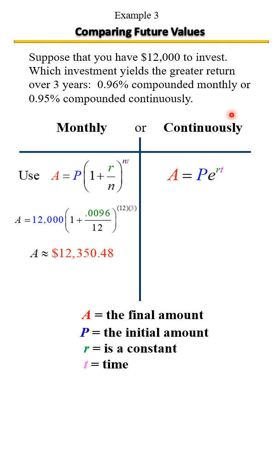Now let's look at compounded continuously. In terms of our values, we have the 12,000. Remember for the initial amount, our rate is going to be a little different because compounded continuously says to use 0.95%. So when we write it as a decimal, it's going to be 0.0095. Our time is three years.